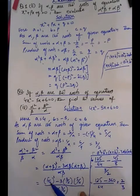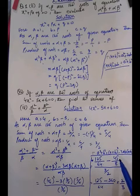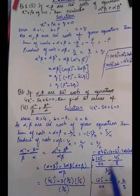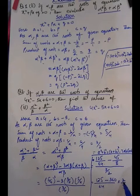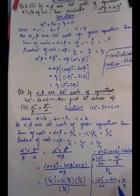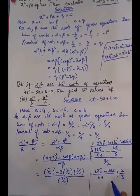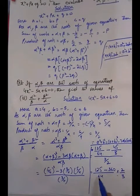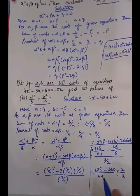5 cubed is 125, 4 cubed is 64, so we have 125/64. Then minus 3 × 3 = 9, and 5 × 9 = 45, with 4 × 2 = 8, giving 45/8. And 3/2 becomes 2/3 when reciprocated. So we get 125/64 minus 360/64, and multiply by 2/3, then simplify the whole expression.